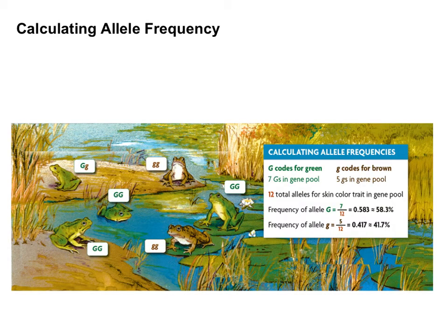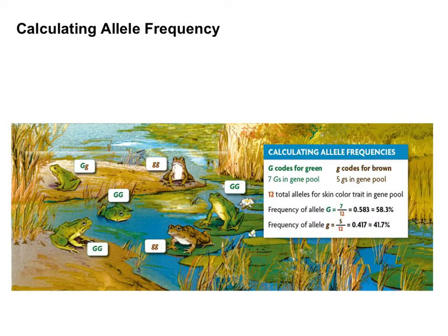To calculate allele frequencies, you need to know the alleles — the big G's and little g's in this image. We have seven big G's and five little g's, for a total of 12 alleles in this population of frogs. Calculating the actual frequency is just taking a percent: seven out of 12 are big G, which becomes 58.3%, and five out of 12 for little g becomes 41.7%. That is how common each allele is in the population.